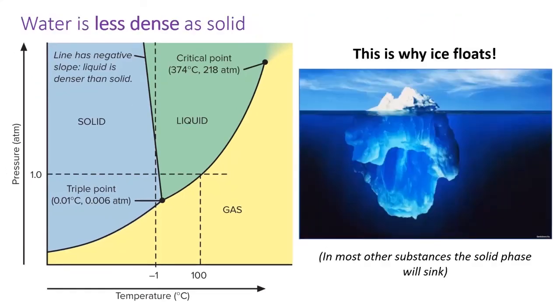Another remarkable fact about water is that water is less dense as a solid. This is rare. In most substances, the solid phase is more dense than the liquid phase. We can observe this on water's phase diagram because the line between solid and liquid has a negative slope. That is, it tilts to the upper left.